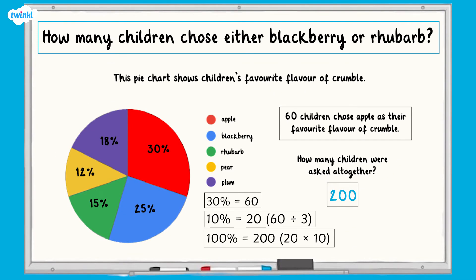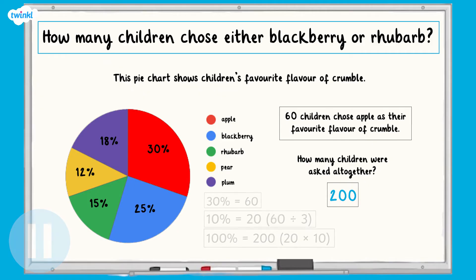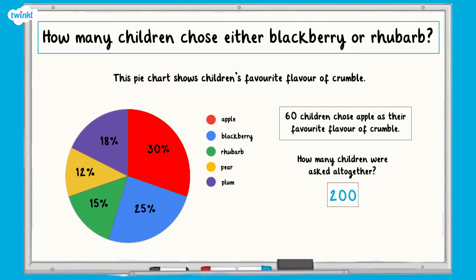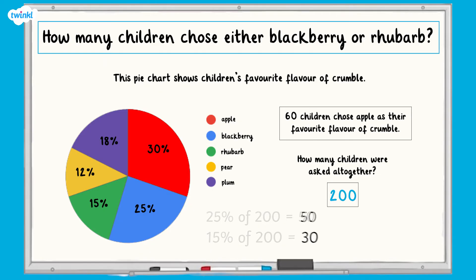Using this information, can you work out how many children chose either blackberry or rhubarb? Pause here and have a go. 25% chose blackberry. 25% of 200 equals 50. 15% chose rhubarb. 15% of 200 equals 30. So add 50 and 30 together and you'll get 80. That means that 80 children chose either blackberry or rhubarb.